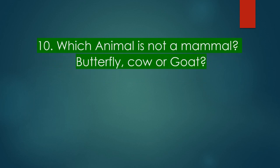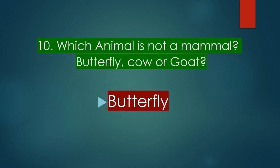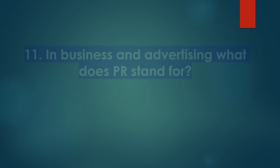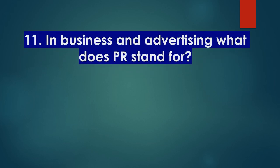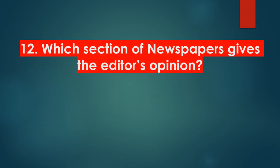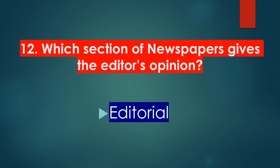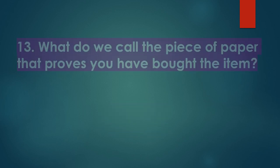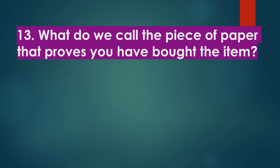Which animal is not a mammal — butterfly, cow, or goat? Butterfly. In business and advertising, what does PR stand for? Public relations. Which section of a newspaper gives the editor's opinion? Editorial. What do we call the piece of paper that proves you have bought an item? Receipt.